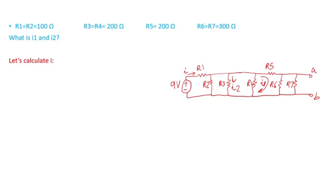There are different ways to tackle this problem, but I'm going to show you the approach I'll use. The first thing is to calculate the total current I supplied by this 9 volt DC source.